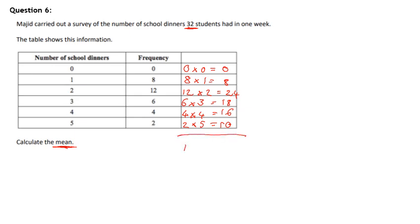So then we're going to work out the total number of dinners. The total number of dinners is 76.